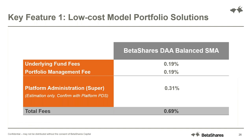I'll highlight some key features of the BetaShares SMA models. Firstly, low cost. The underlying fund fees and portfolio management fees are 19 basis points each — exactly as stated in the PDSs of the platforms. The platform administration fee is indicative at around 31 basis points on average, though it can be lower depending on scale. So the all-in fee load to the client, including administration and before the advisor service fee, comes in at around 70 basis points or potentially less. A low-cost ETF model portfolio doesn't mean you're giving up opportunities to benefit from alpha.